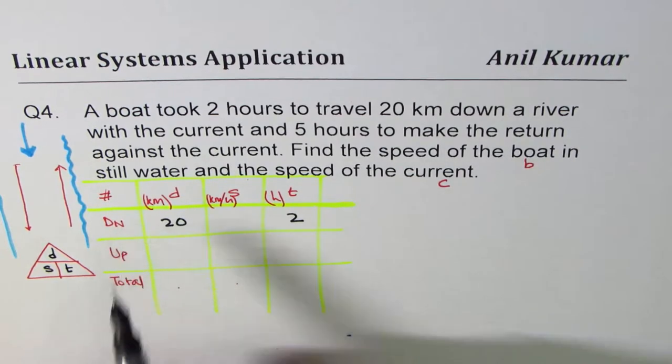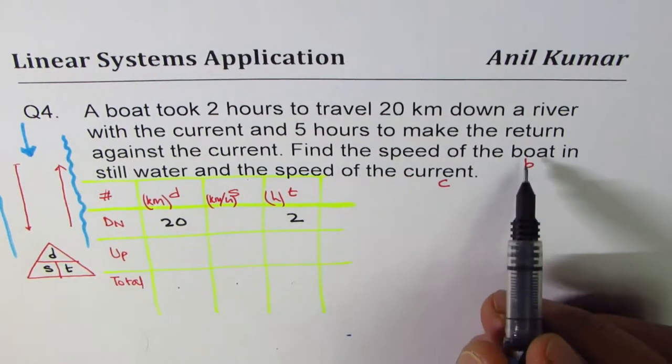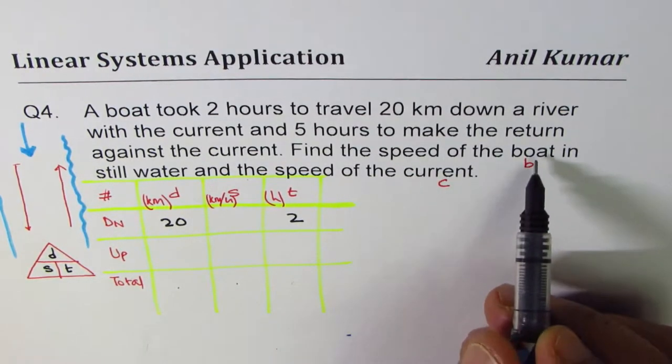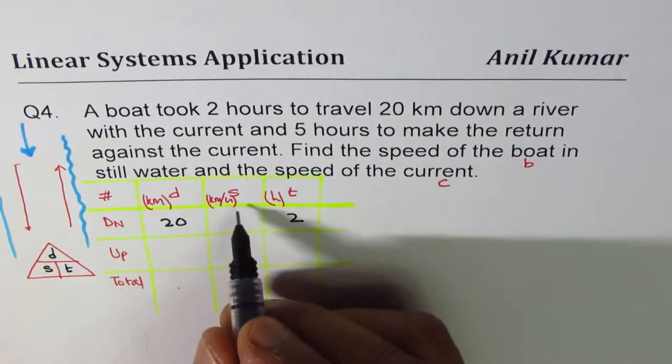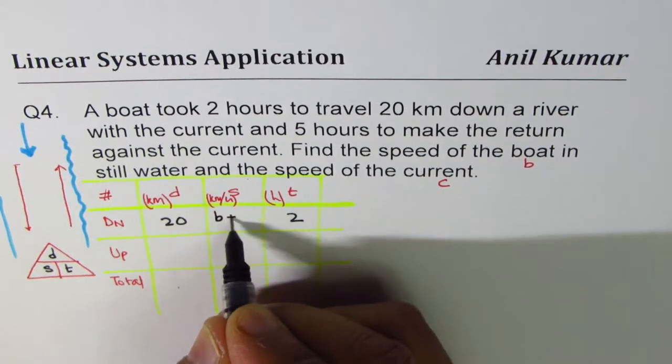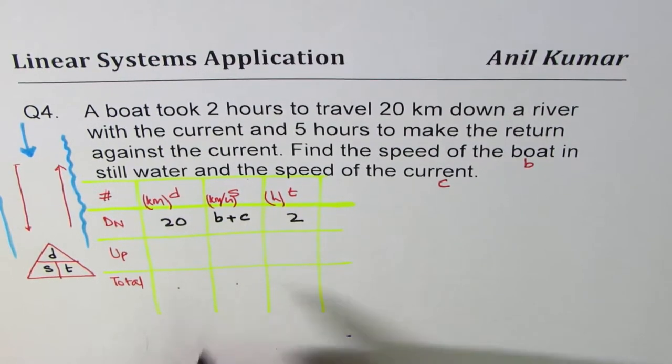Then it says, so this is with the current. With the current, we define boat as B, C as current. So the speed is at them. So we have B plus C. With the current.